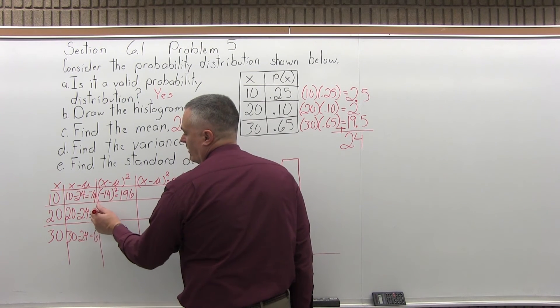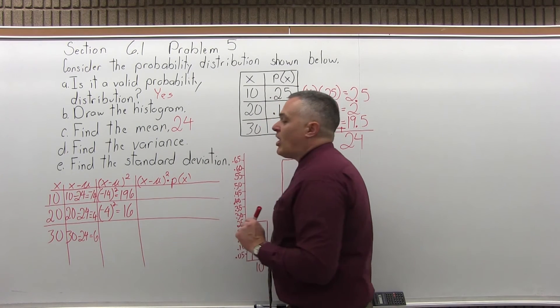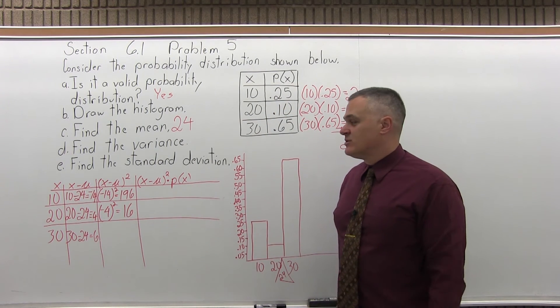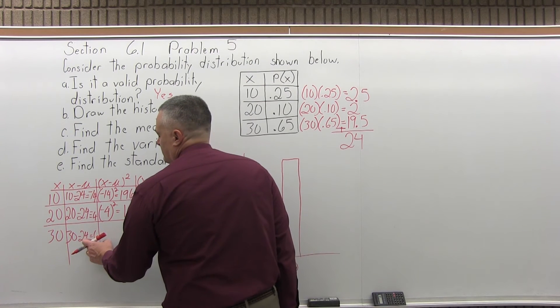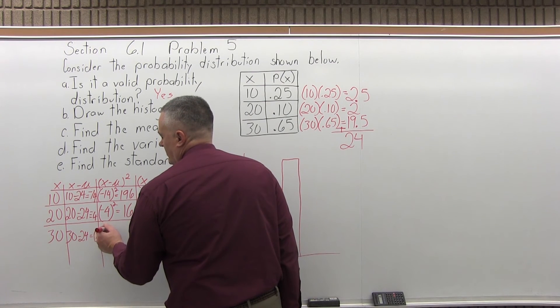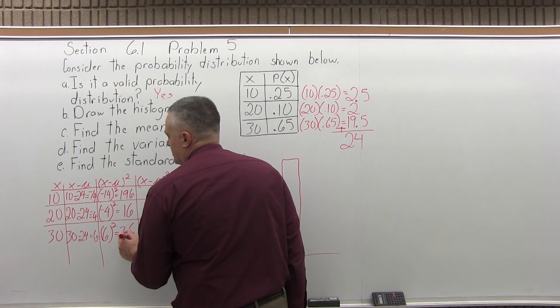So I'm going to do negative 4, second power. Negative 4 times negative 4 is positive 16. Again, the negatives cancel when you do second power. And in the bottom row, the x minus mu result was 6. So in this column, I'm going to do 6, second power. 6 times 6 is 36.